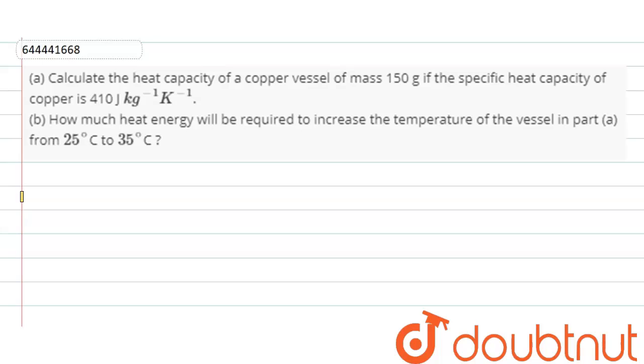Hello friends, our question part a says: calculate the heat capacity of a copper vessel of mass 150 grams if the specific heat capacity of copper is 410 joules per kg per kelvin.